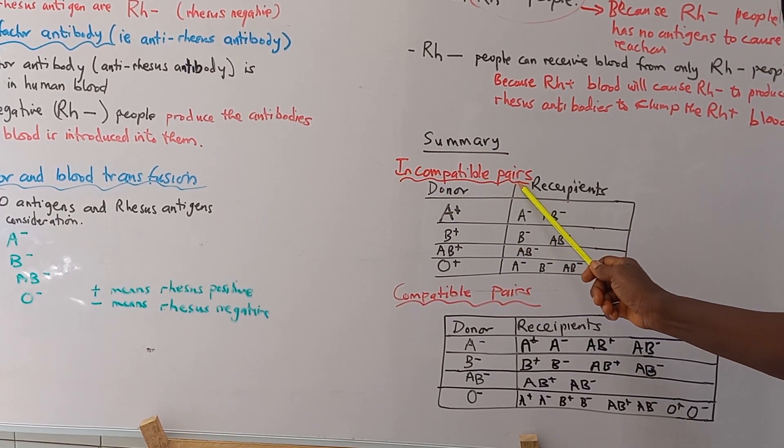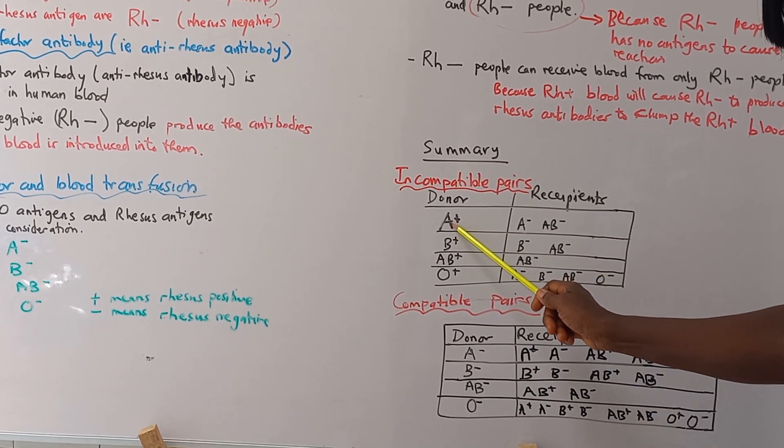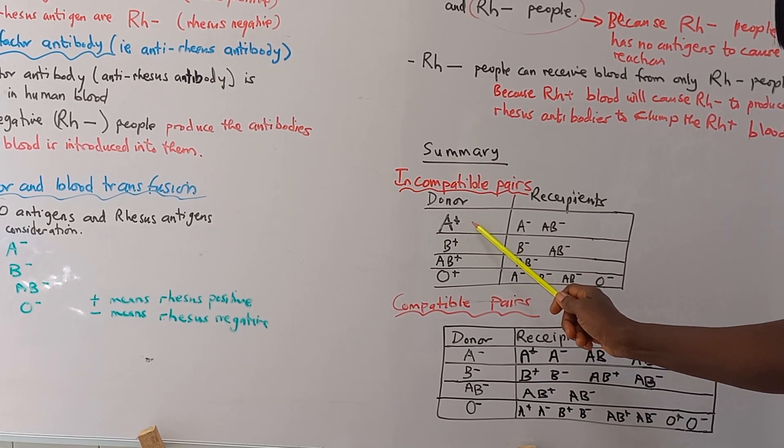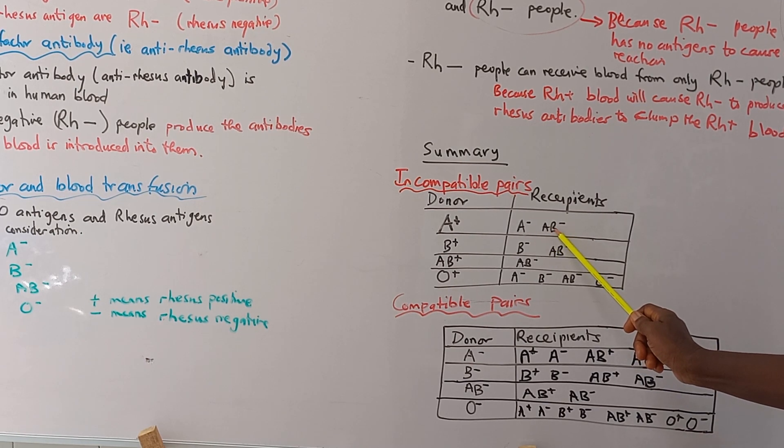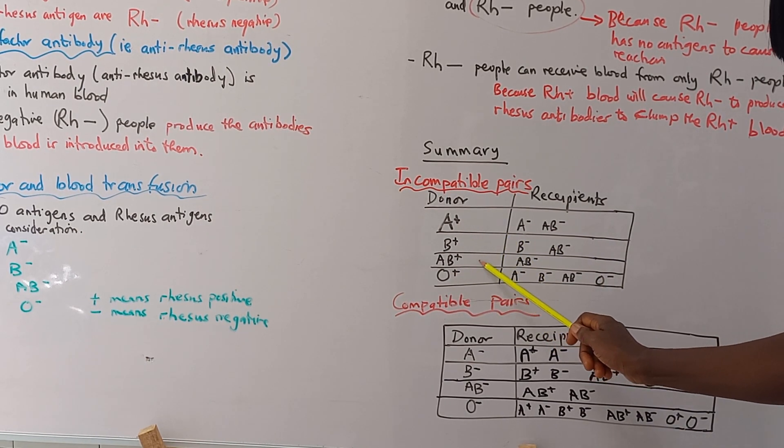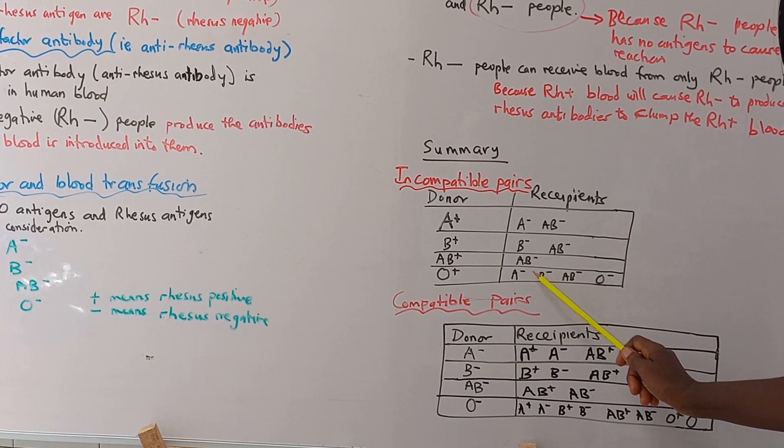So we've made a summary of incompatible pairs. If a donor is blood group A positive, this donor cannot give blood to blood group A negative or AB negative. So all positives cannot give blood to any negative.